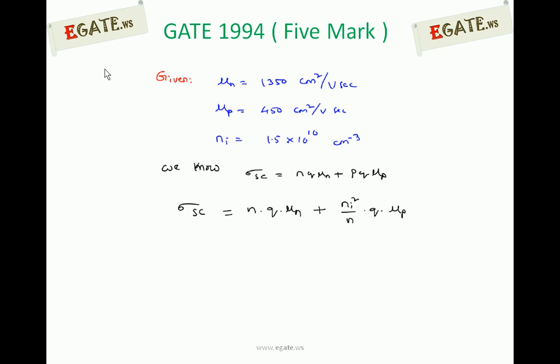We can calculate minority carriers from majority carriers using the mass action law. Assuming we know the electron concentration n, we calculate hole concentration as p = Ni² / n. The mass action law states that under thermal equilibrium, the product of total electron and hole concentration is always constant: n × p = Ni². Substituting into the conductivity equation: σ = nqμn + (Ni²/n)qμp.